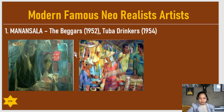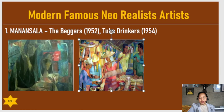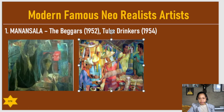Now we go to the famous art of the modern era. The first famous neorealist artist is Manansala, with his paintings The Beggars in 1952 and The Tuba Drinkers in 1954. The Beggars depicts the plea of poor people to the government. The Tuba Drinkers is about local tuba drinkers in a traditional nipa house — men drinking while a woman serves the tuba. Vicente Manansala's work is described as visions of reality teetering on the edge of abstraction.